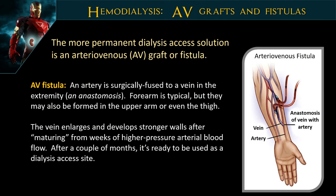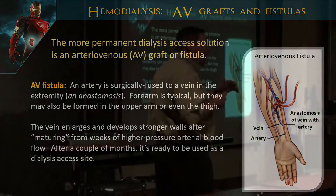Now talking about AV grafts and fistulas — the differences between them, how to take care of them, and why we're absolutely not going to access these in the field. The fistula is where they take an artery and fuse it with a vein. This takes several weeks — the high pressure causes the vein to get larger and stronger, and it can be used on both sides: arterial and venous. This is more of a permanent fix, but it may take a couple of months for it to fully mature after surgery.